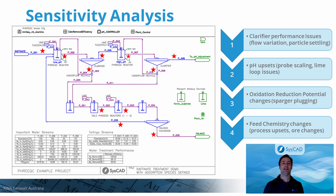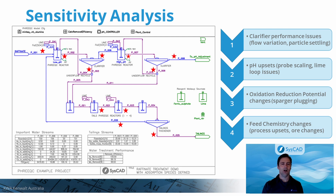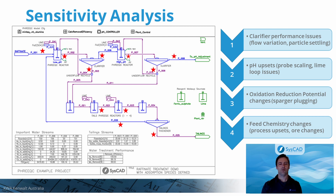A number of sensitivity analysis runs were conducted to determine the effect of various process upsets on effluent quality. The process changes considered were clarifier performance issues, pH upsets, ORP changes, and changes to the feed chemistry. Clarifier performance issues can occur from things like water treatment plant feed fluoride variability and settling issues. pH upsets can occur from probe scaling, lime loop plugging, or probe malfunctions. ORP changes can happen when air spargers plug up. Changes to feed chemistry can occur from balance of plant process upsets, feed ore changes, weather events, and other factors.